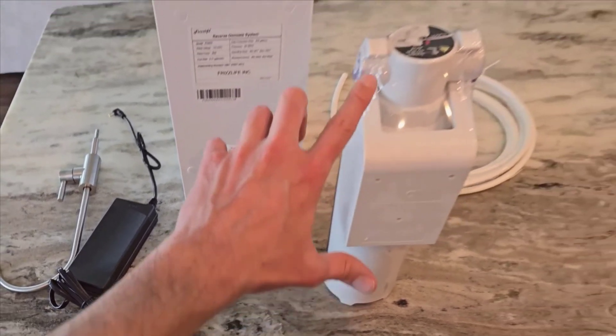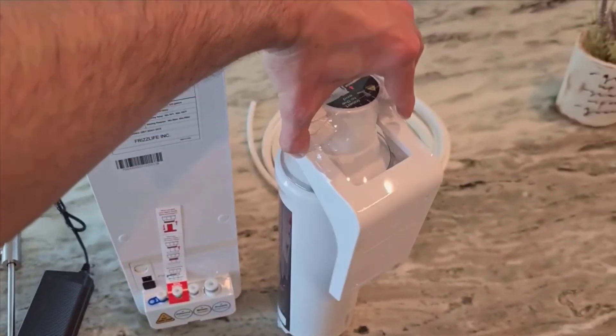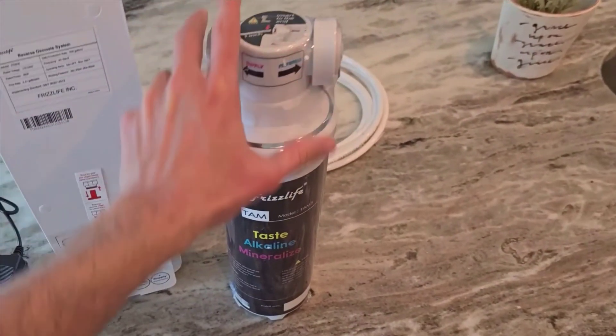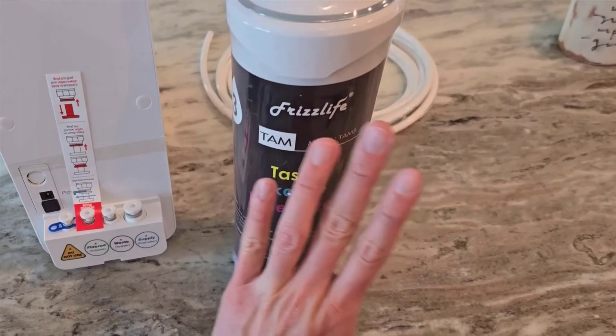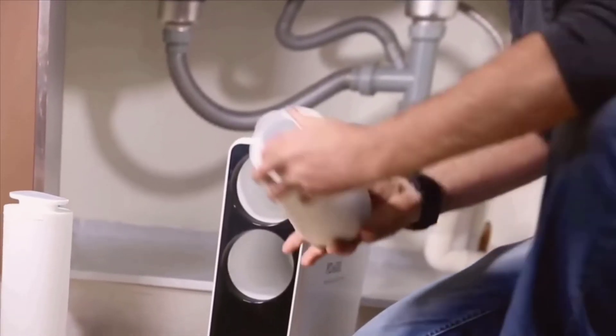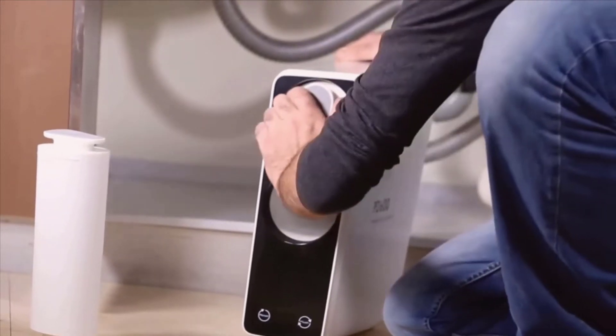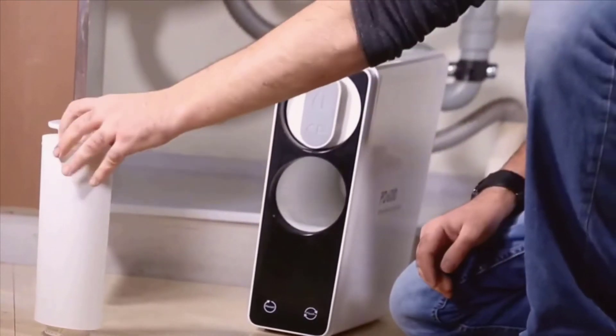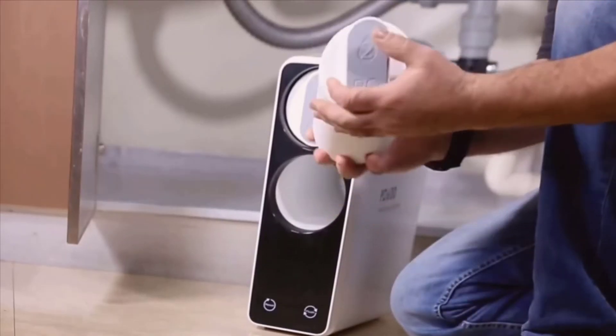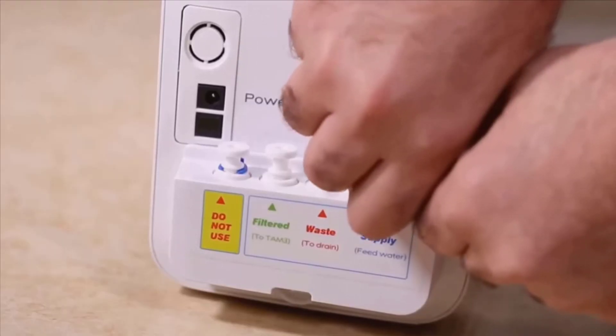Another standout aspect is the environmental consideration of this system. The FrizzLife Roe system boasts a 1.5 to 1 drain ratio, which means it wastes significantly less water compared to traditional Roe systems. This efficiency not only saves water, but also helps reduce your water bill. A win-win for both your wallet and the planet.